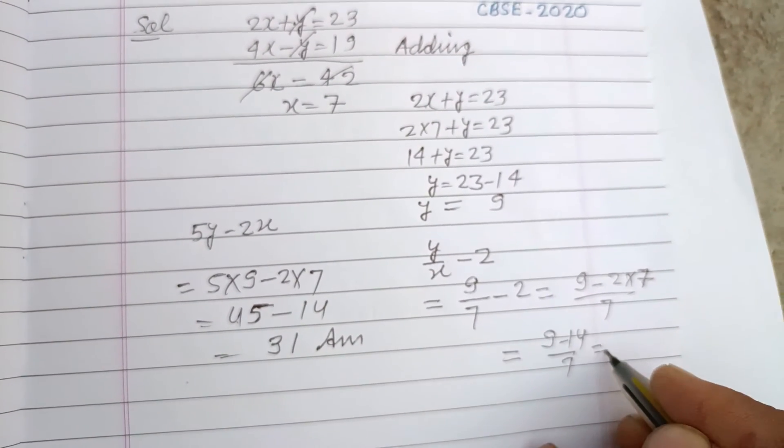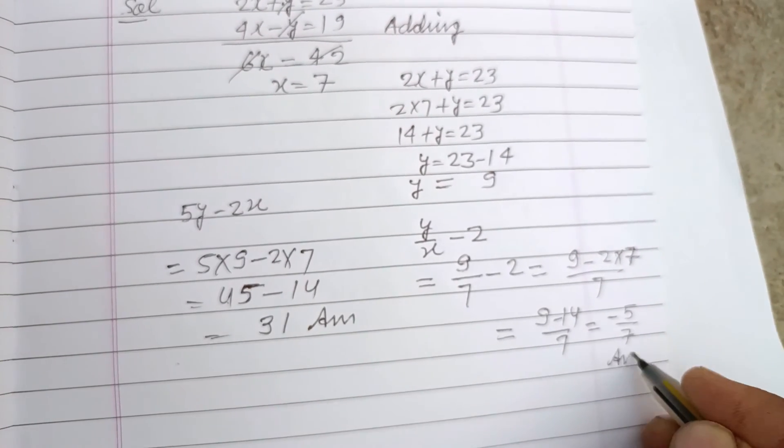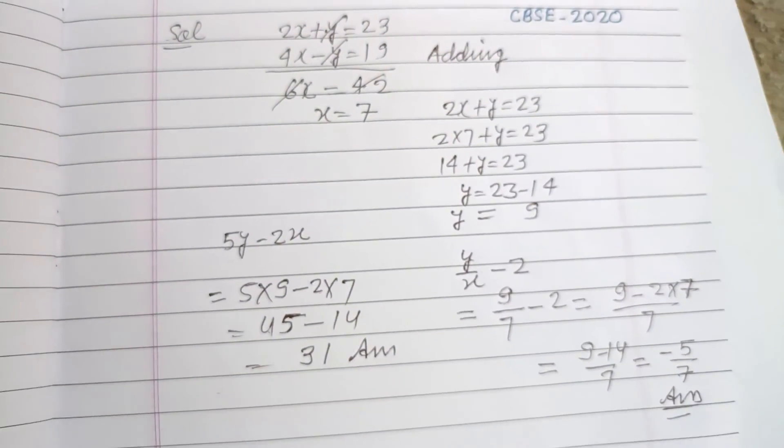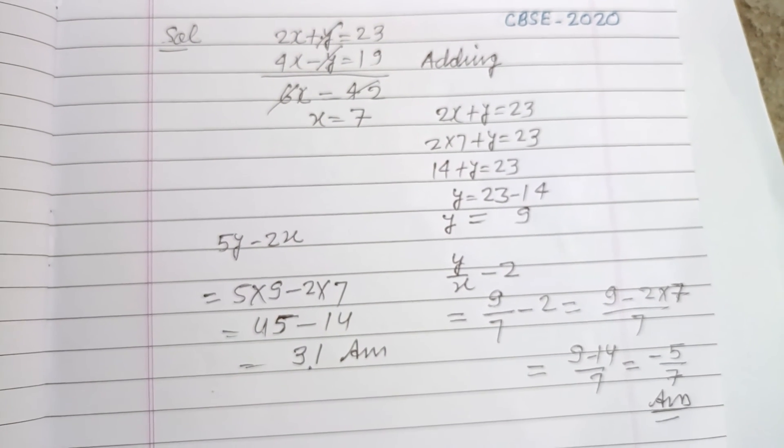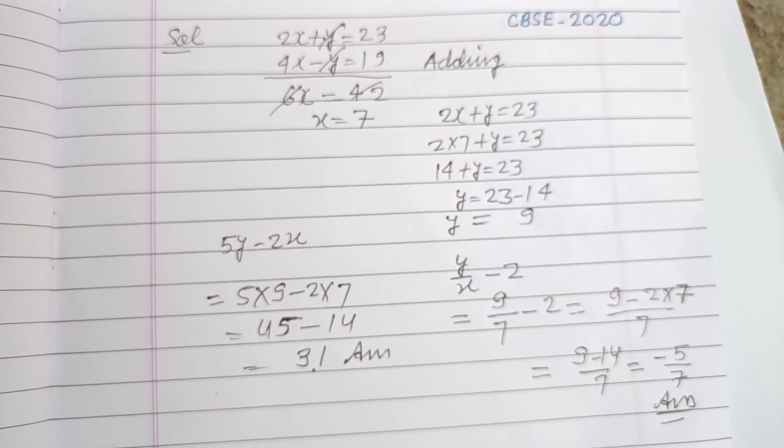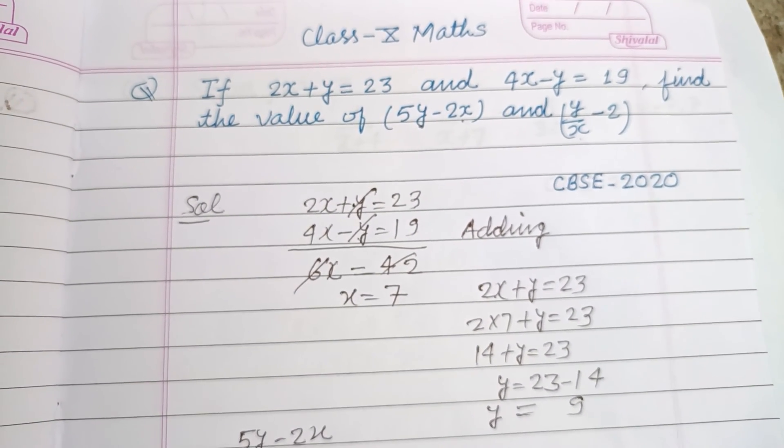So students, the required answers are 31 and -5/7. I hope you got it. Please like the video, subscribe to the channel. Thanks for watching.